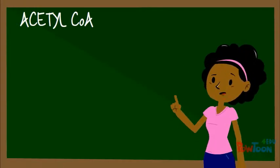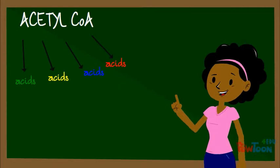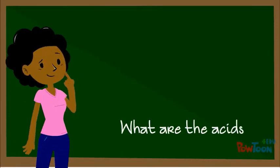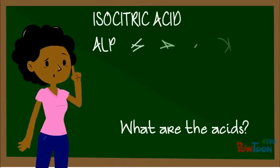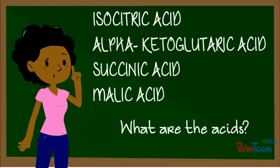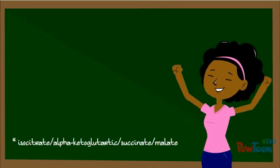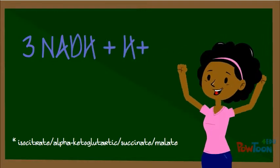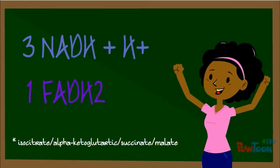Acetyl-CoA will go through several steps that break down acids and form electron carriers in the process by using dehydrogenases. The acids we would want to focus on are isocitric acid, alfa-ketogluteric acid, sucinic acid, and malic acid. By using dehydrogenases, a total of 3 NADH plus H pluses and 1 FADH2 are produced.